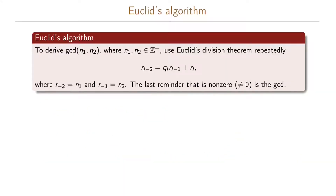Euclid's algorithm is a way to derive the greatest common divisor between two numbers n1 and n2. When we use this algorithm, we repeatedly use Euclid's division theorem, taking advantage of Euclid's recursion. We repeatedly write r_{i-2} equals q_i times r_{i-1} plus r_i, and at the start of the algorithm we set r_{-2} as n1 and r_{-1} as n2.